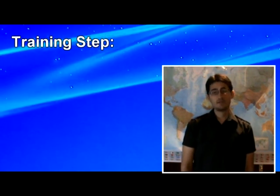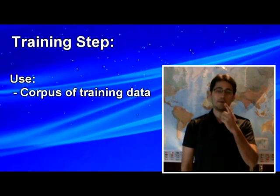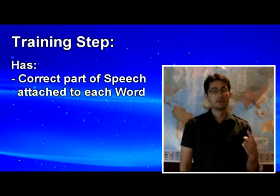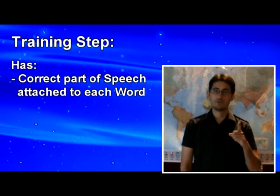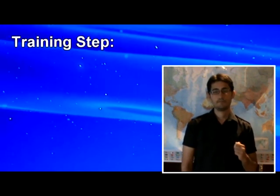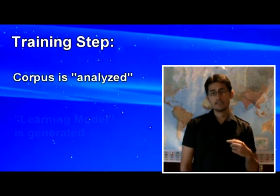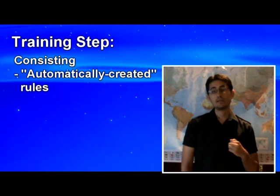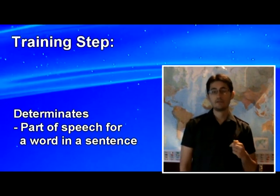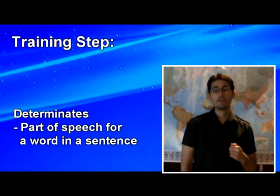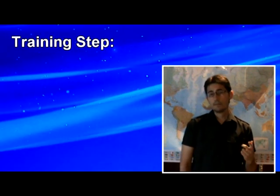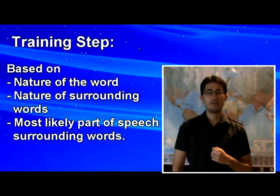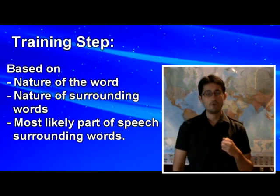The training step makes use of a corpus of training data, which contains a large number of sentences, each of which has the correct part of speech attached to each word. This corpus is analyzed and a learning model is generated from it, consisting of automatically created rules for determining the part of speech for a word in a sentence, typically based on the nature of the word in question, the nature of surrounding words, and the most likely part of speech for those surrounding words.